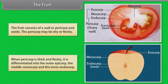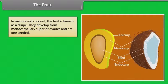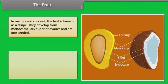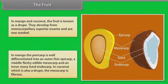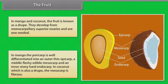When pericarp is thick and fleshy, it is differentiated into the outer epicarp, the middle mesocarp, and the inner endocarp. In mango and coconut, the fruit is known as drupe. They develop from monocarpellary superior ovaries and are one-seeded. In mango, the pericarp is differentiated into an outer thin epicarp, a middle fleshy edible mesocarp, and an inner stony hard endocarp. In coconut, which is also a drupe, the mesocarp is fibrous.